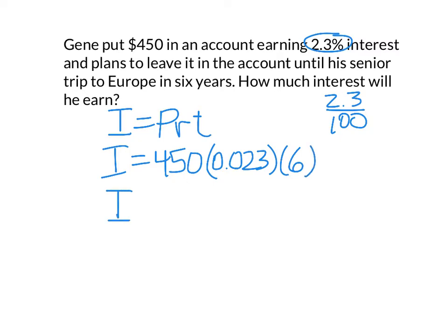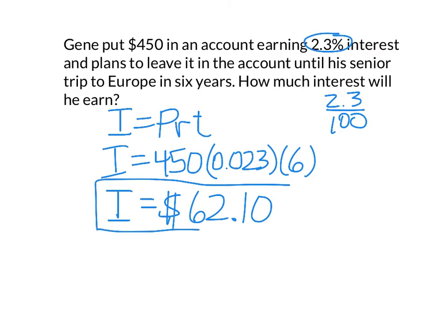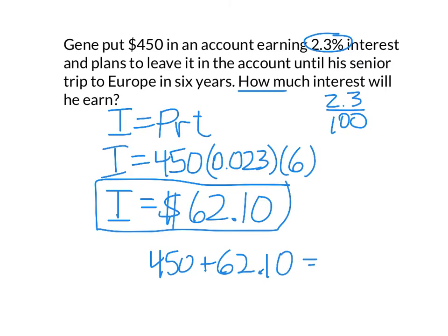Since they're all on the same side of the equation, there's no inverse operations — you simply multiply the three of those together, and that equals $62.10. That's how much interest would be earned. Now if the question ever asks how much will he have in the account, then you would need to do $450 plus $62.10. But this one just asks how much interest will he earn.